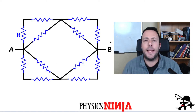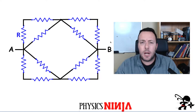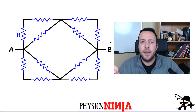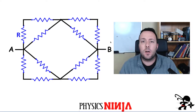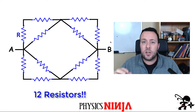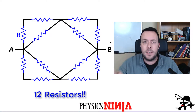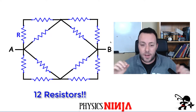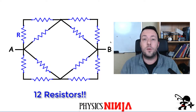Hi everyone. Today I want to look at an equivalent resistance problem. I have two points A and B, and in between those two points I have a network of 12 resistors. The resistors are combinations of resistors in parallel and in series. We're going to apply the tools in order to simplify these 12 resistors into one equivalent resistor.